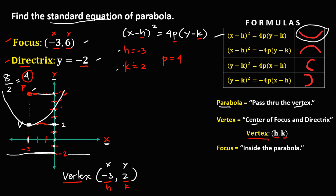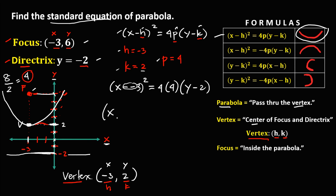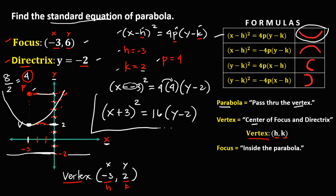Now substitute these values to find the standard equation. We have (x minus negative 3) squared equals 4 times 4 times (y minus 2). Simplifying: the double negative gives us (x plus 3) squared equals 16 times (y minus 2). This is now the standard equation of this parabola.